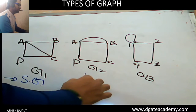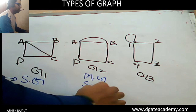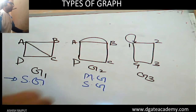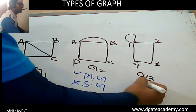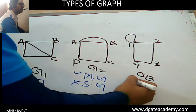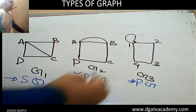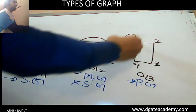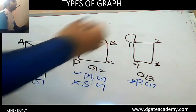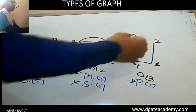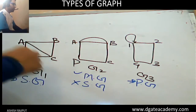This graph is a multi-graph but not a simple graph. This one here is a pseudo graph. Referring back to the definition, in a pseudo graph parallel edges as well as loops are allowed, but both are optional — meaning either or both may be present.